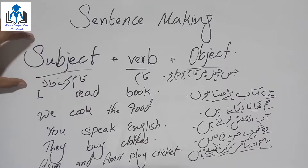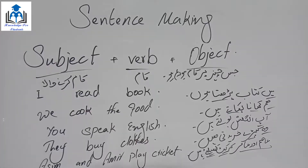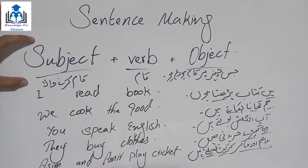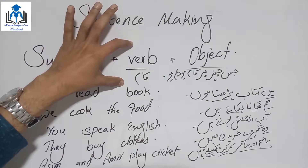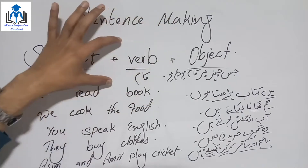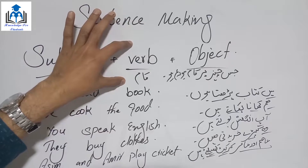This is the main point. If you understand this, you can easily make thousands of sentences — as long as you know the English of those words. Today we learned that to make a simple sentence, we need three things: number one Subject, number two Verb, and number three Object. Subject = the doer of the action; Verb = any action or state; Object = what the action is performed on.